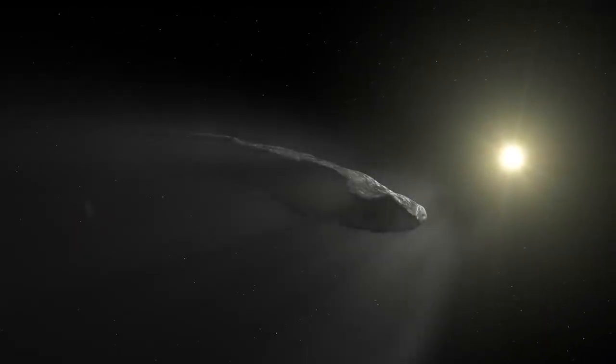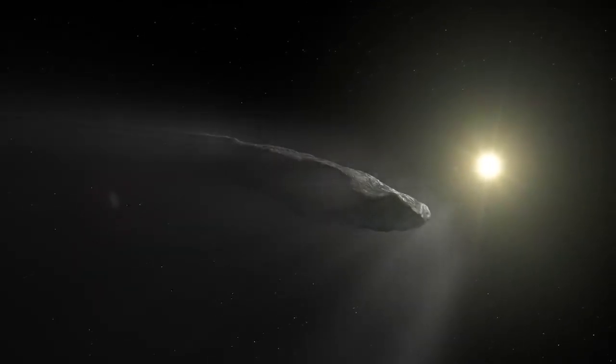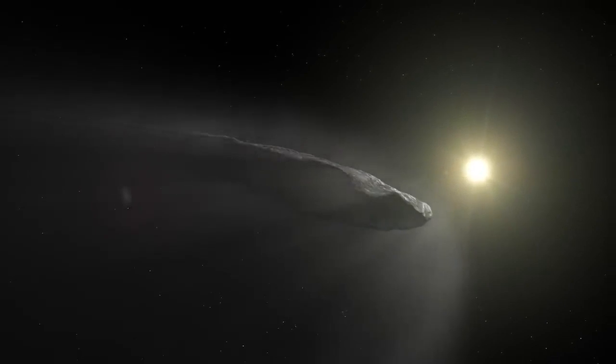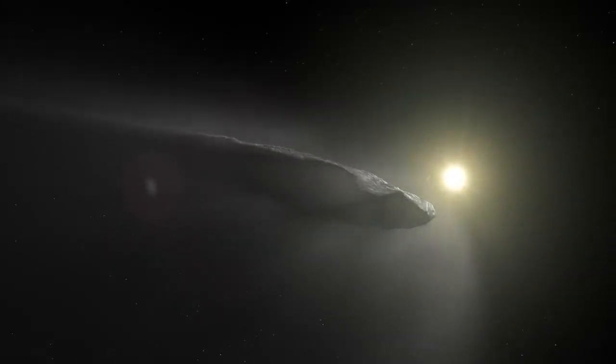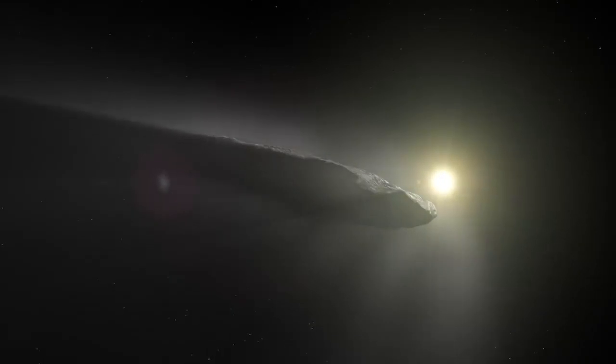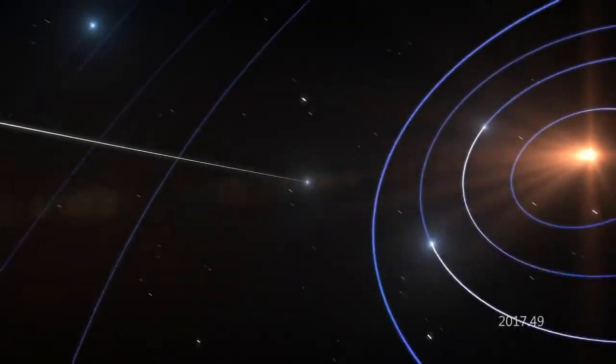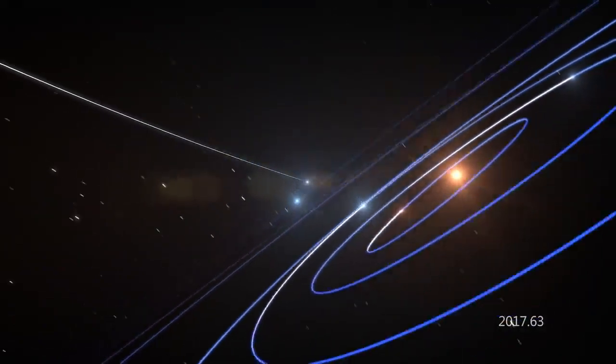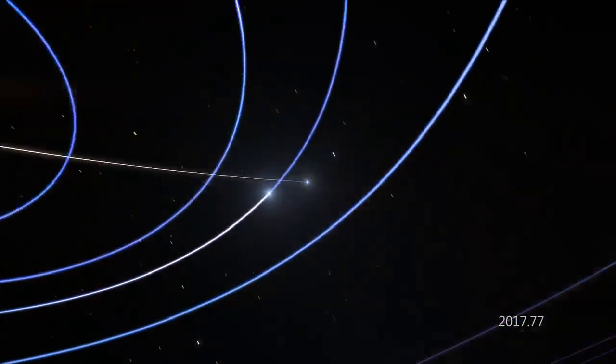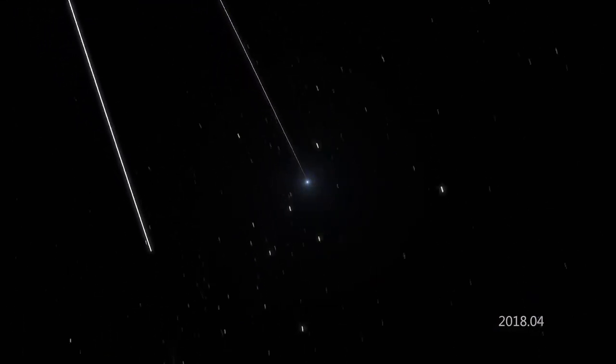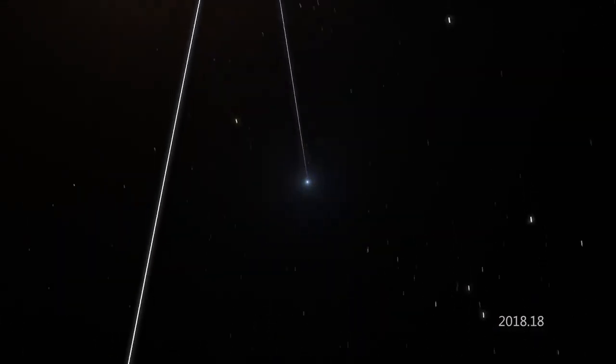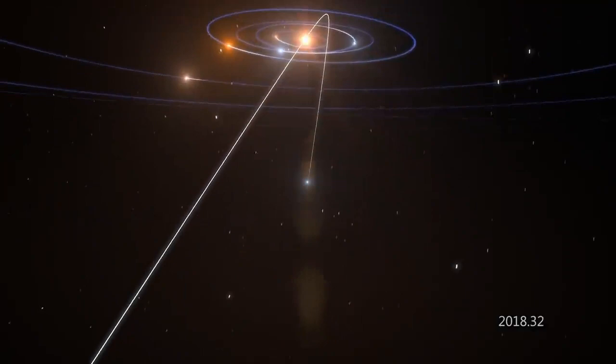The telescope has also captured observations of some special interstellar visitors. In 2018, Hubble studied Oumuamua, the first interstellar object discovered in the solar system. In cooperation with other ground-based telescopes, it was determined that the object was likely a comet and was moving away from the Sun faster than previously expected.